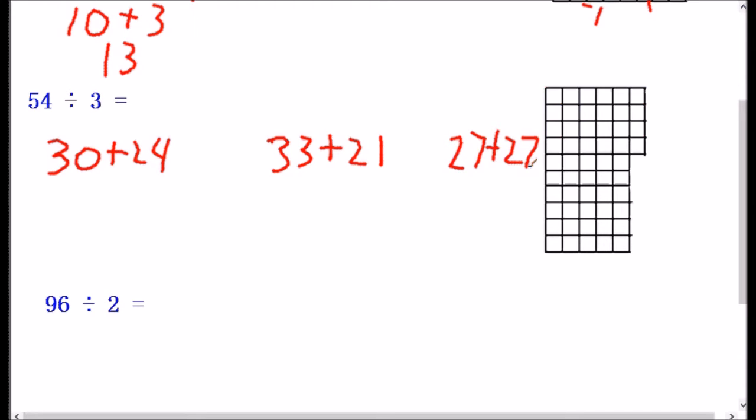Now notice in each case, all of these are multiples of three, because I'm dividing them into groups of three. And it doesn't help if we're trying to turn it into something like 50 plus 4, or 40 plus 14, because none of those are multiples of three. And so they will not divide evenly. So remember when you're separating these, we want to separate them into multiples of what we're dividing by, which in this case is three.